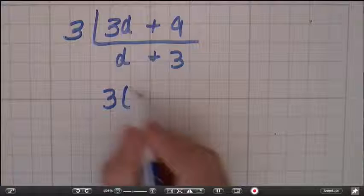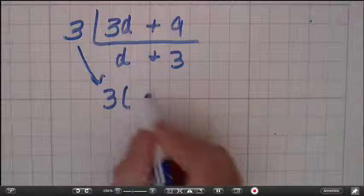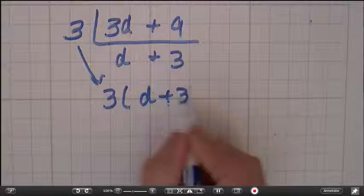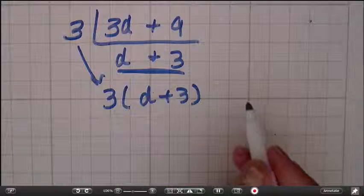To factor that, it's 3, this 3 right here, times d plus 3, this monomial right here.